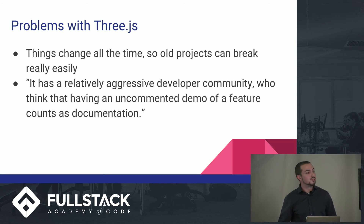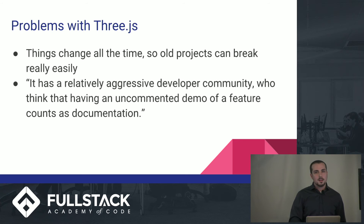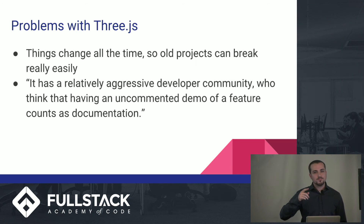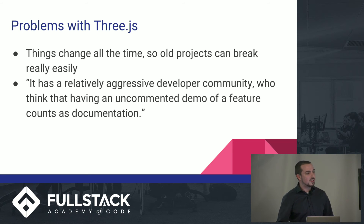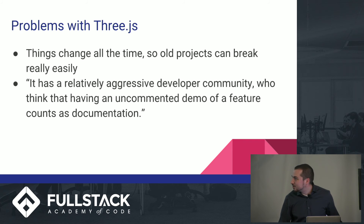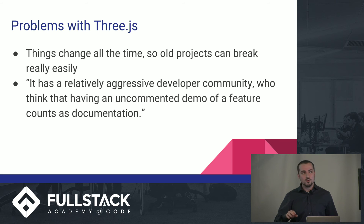I want to talk about some problems I found with Three.js. One thing I saw was that it changes enough that if you write something in an old version of Three.js and then a new version comes out, your old code might not work anymore. So you have to be aware that something you write may no longer function if there are further updates. And there's this quote which I thought was kind of funny: it has a relatively aggressive developer community who think that having an uncommented demo of a feature counts as documentation. So it kind of just sounds like people that are really into Three.js are big jerks about it — just be aware of that if you're trying to find out how to render something properly.